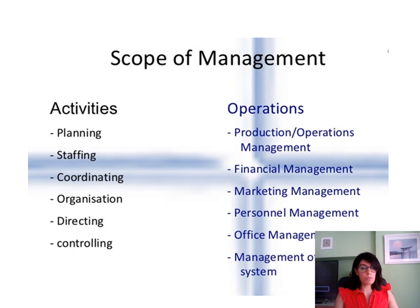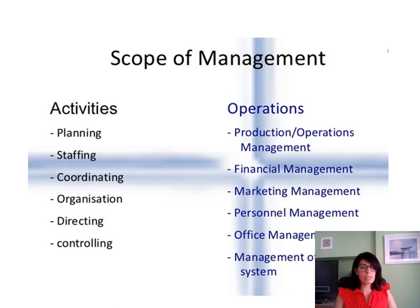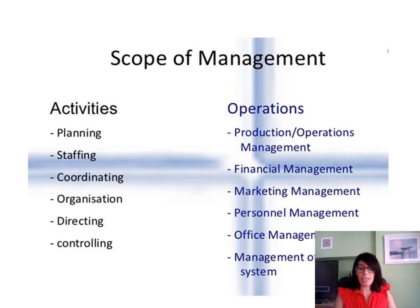Let's now look at the scope of management — how far does the role stretch? In terms of activities, managers are involved in planning the work, making sure there's enough staff, coordinating duties and responsibilities, organising tasks, people and resources, directing people towards goals, and controlling so that everyone stays within their role and responsibilities. On the operational side, there are different levels of management across productions and operations, finance, marketing, personnel or HR, office management and systems management. As you can see, the scope of management goes across the entire organisation.